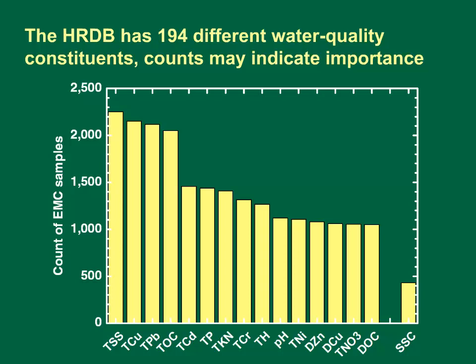The Highway Runoff Database has 194 different water quality constituents. Sample counts may indicate the importance of each constituent. The top 15 constituents, excluding sodium, calcium, and chloride, are total suspended solids, total copper, total lead, total organic carbon, total cadmium, total phosphorus, total Kjeldahl nitrogen, total chromium, total hardness, pH, total nickel, dissolved zinc, dissolved copper, total nitrate, and dissolved organic carbon, which all have more than 1,000 samples.